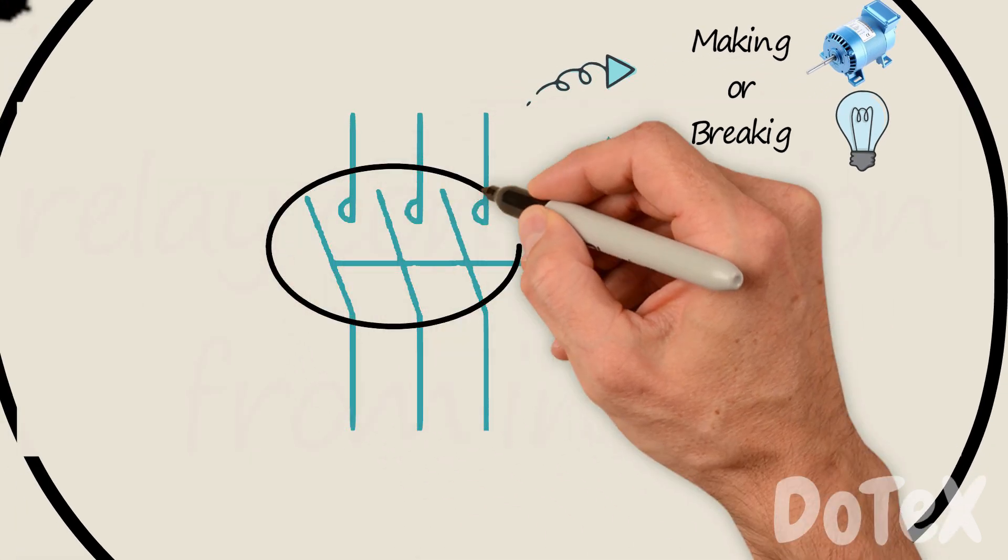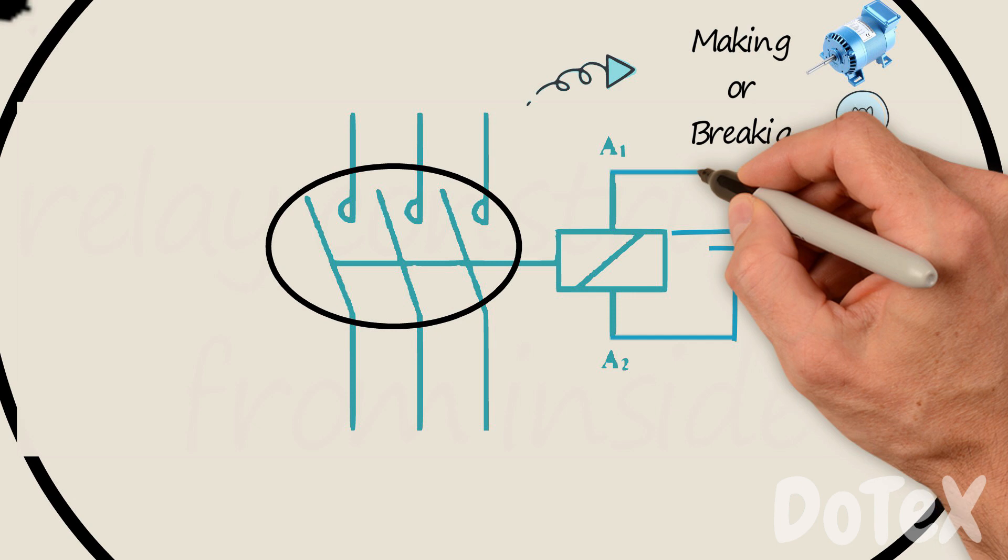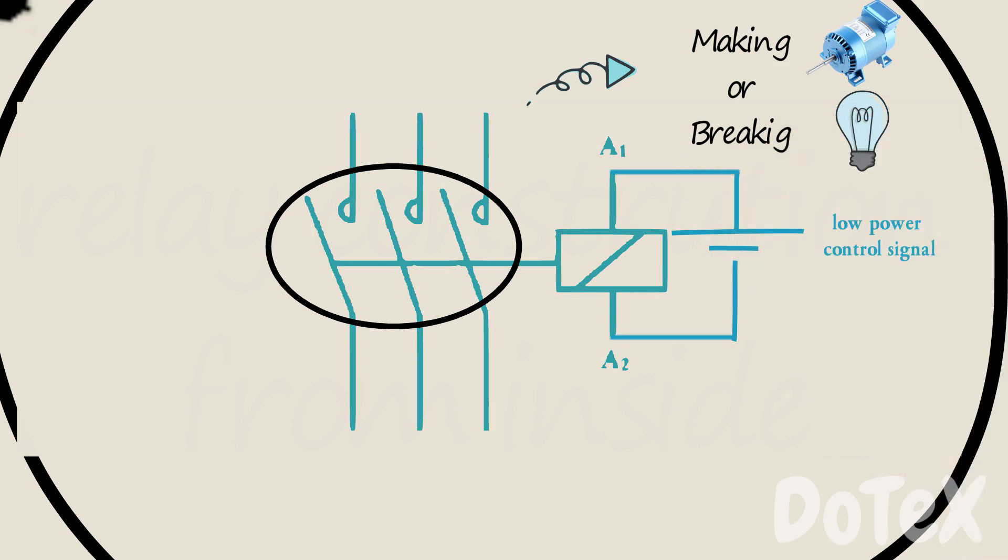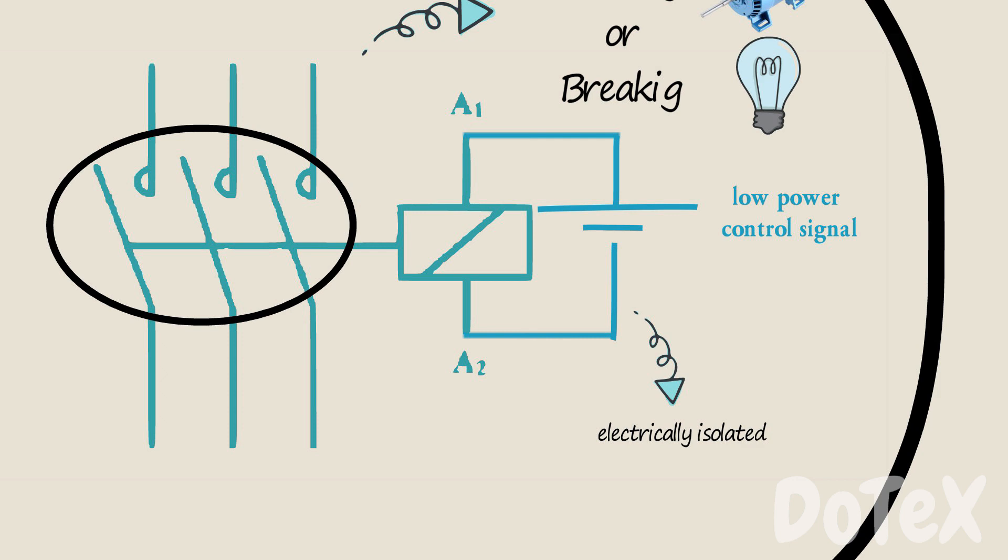These moving contacts are controlled by a low power control signal, and this low power control signal is electrically isolated and provided to the coil of the relay.